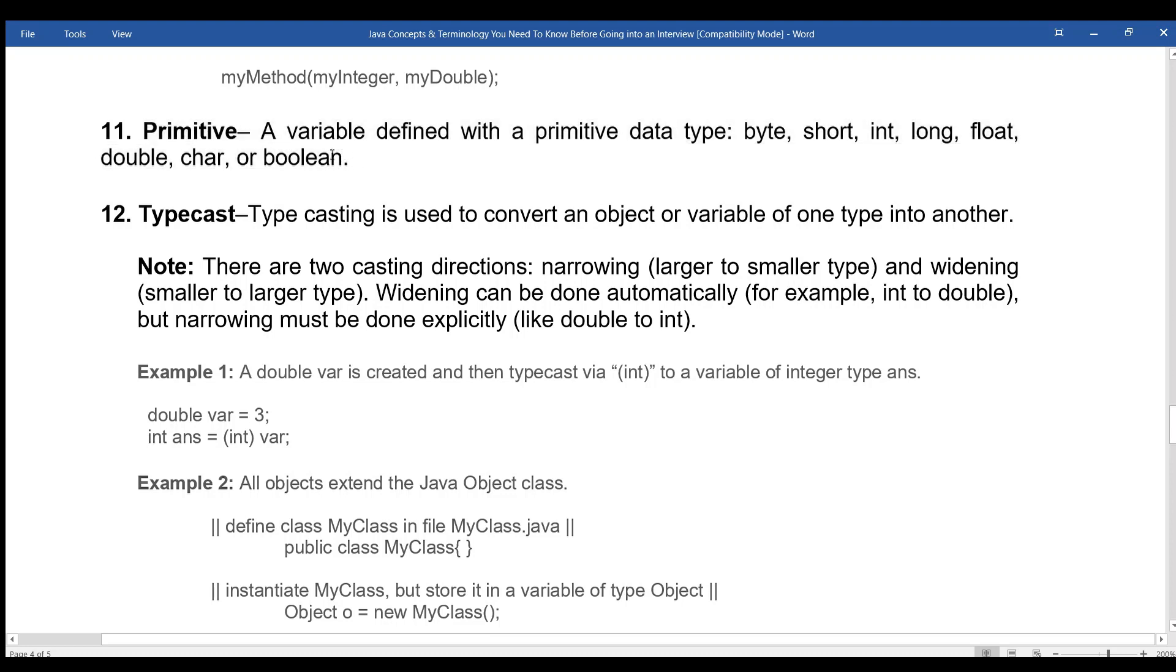Primitive: A variable defined with a primitive data type: byte, short, int, long, float, double, char, or boolean.